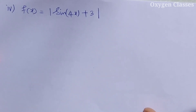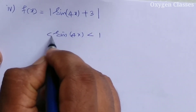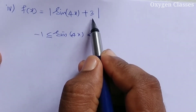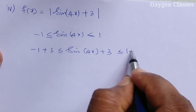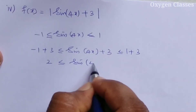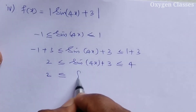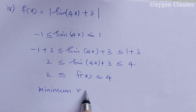For the function f of x equals sin 4x plus 3, since sin 4x lies between minus 1 and plus 1, we add 3 to both sides: minus 1 plus 3 less than or equal to sin 4x plus 3 less than or equal to 1 plus 3. That is 2 less than or equal to f of x less than or equal to 4. So the minimum value is 2 and the maximum value is 4.